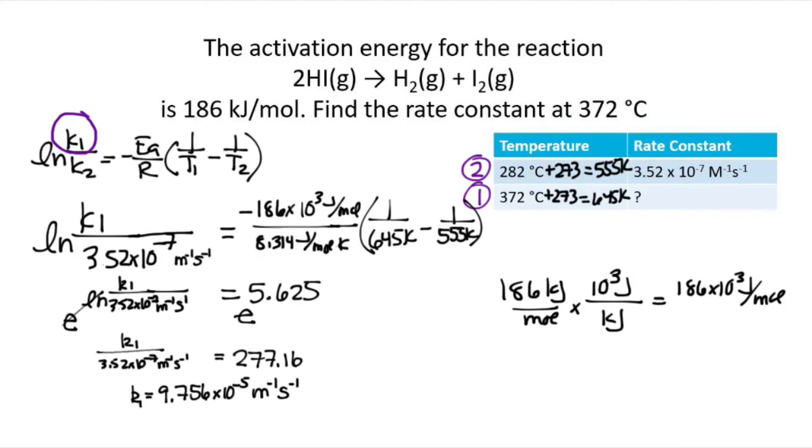So if we look at this rate constant, we see that 9.756, that's probably too many significant figures. Let's round that off to about 3, so let's call that 9.76.